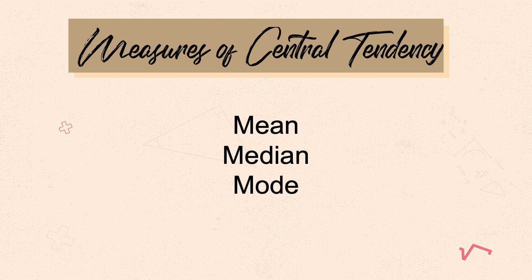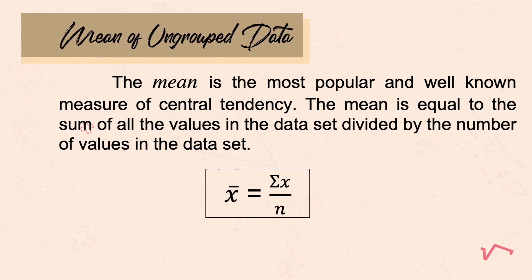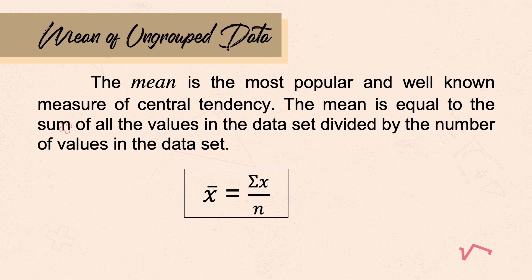The general rule in this class is to round off your answers to the nearest hundredths if it's a decimal. However, if your answer is a whole number, let it be a whole number. For the first part of this video, we'll start discussing ungrouped data.